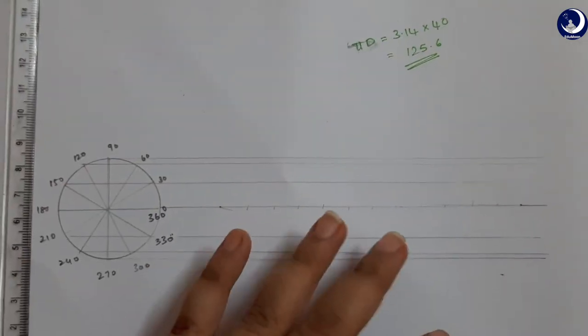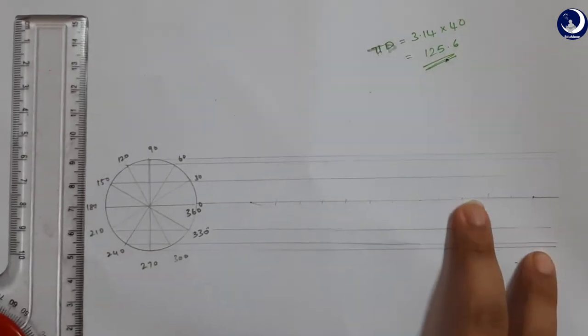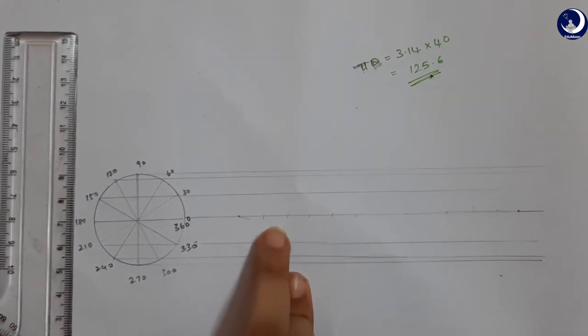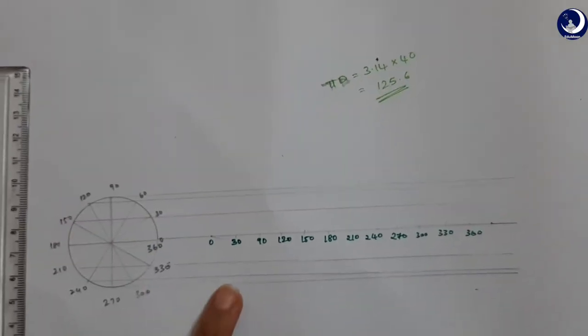Now I will divide it into equal parts. So I divided the circumference into 12 equal parts. Now I am going to mark all these points as angles: 0, 30, 60, 90, etc. So I marked the points.